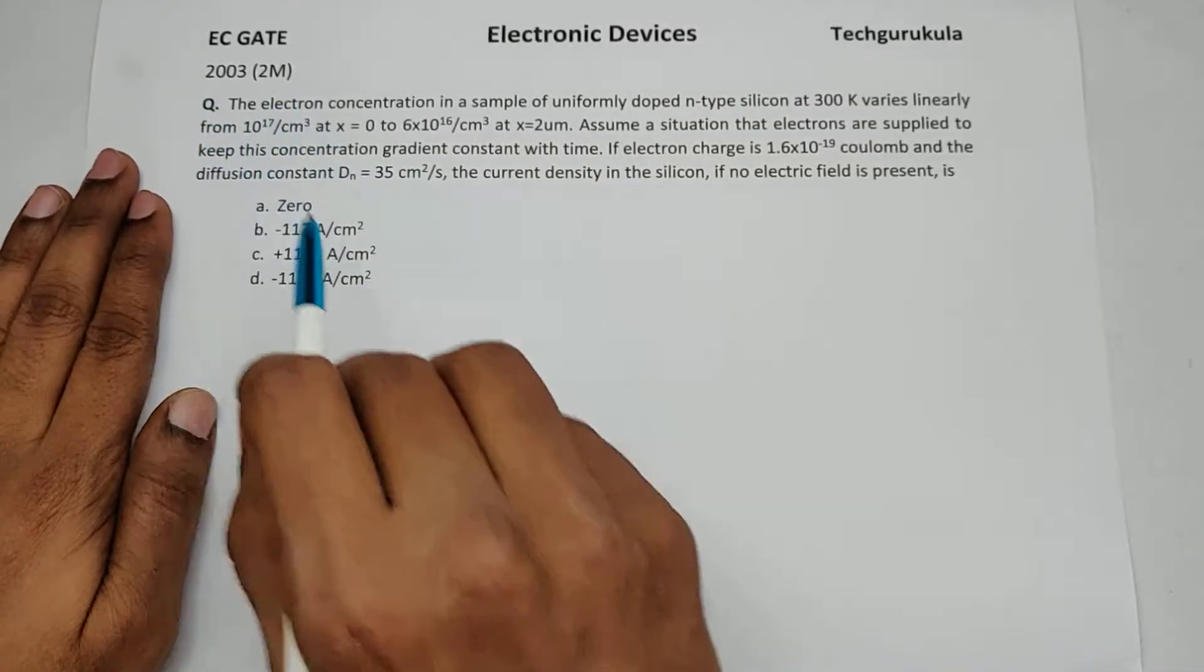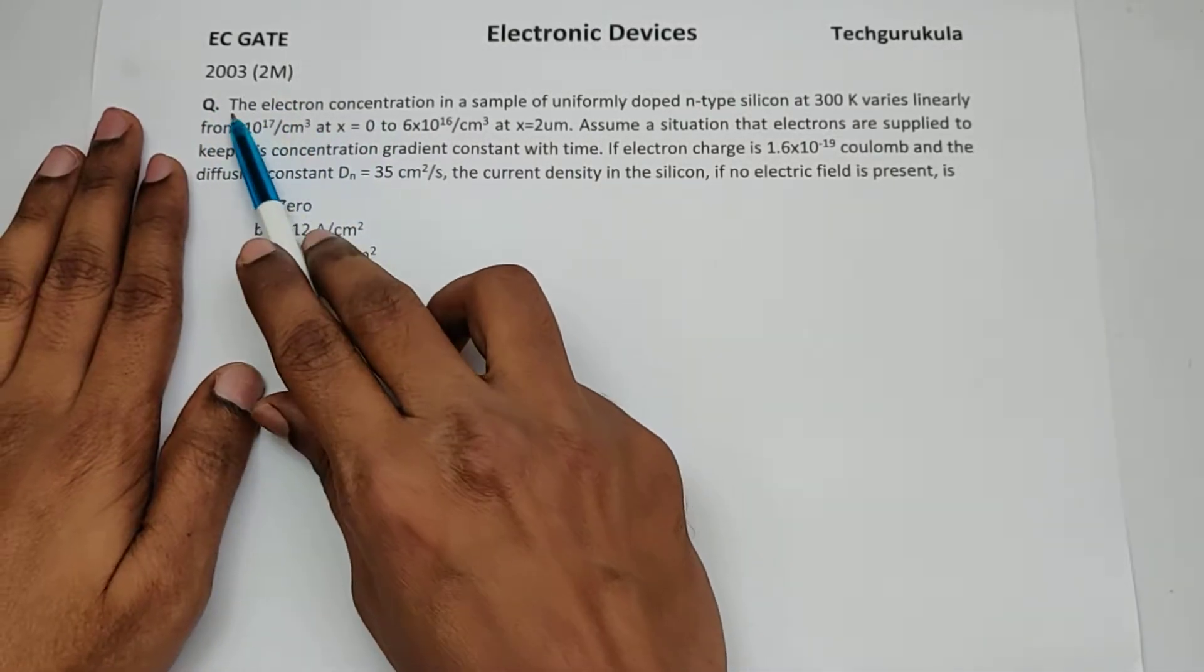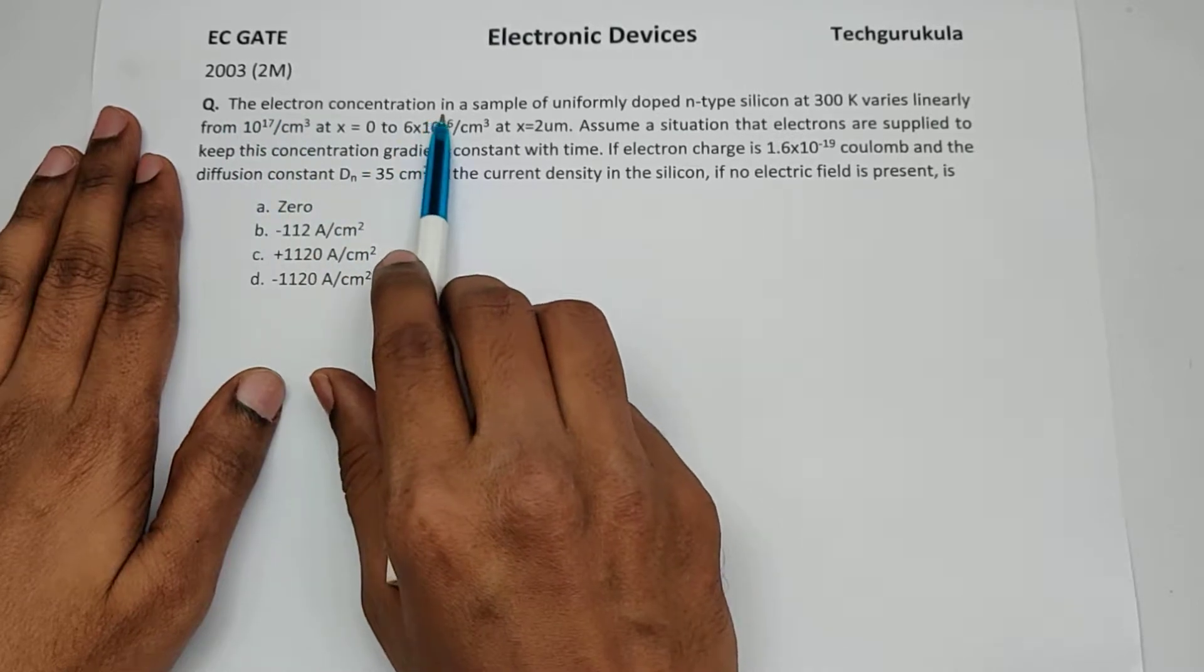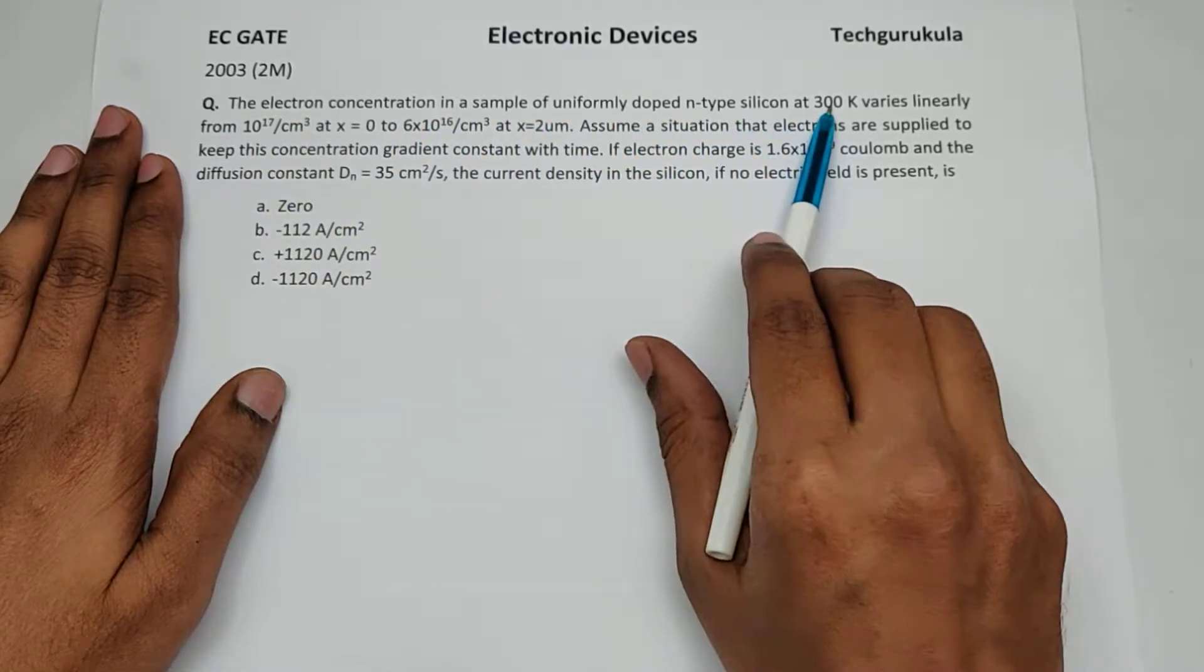This question came in 2003 for two marks. The question is the electron concentration in a sample of uniformly doped n-type silicon.